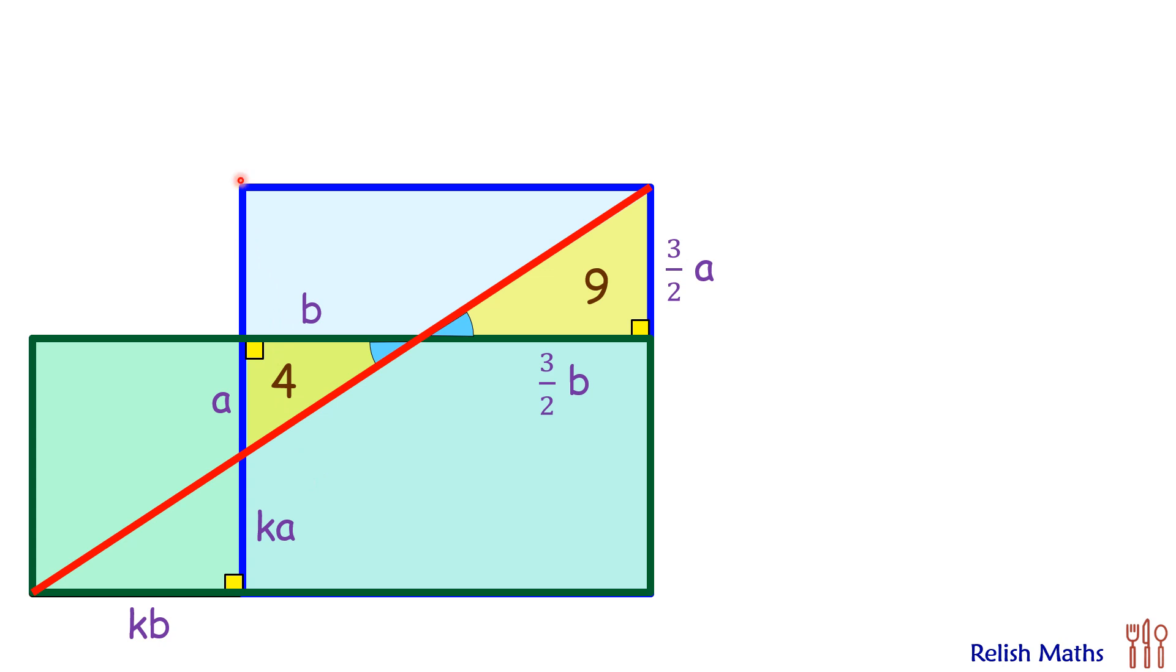Now we know that this blue rectangle and this green rectangle, they are equal in areas. So if this area is common between both the rectangles, the top area, let's say if this area is x, then this top part is x plus 9. And thus this part will be x plus 9.